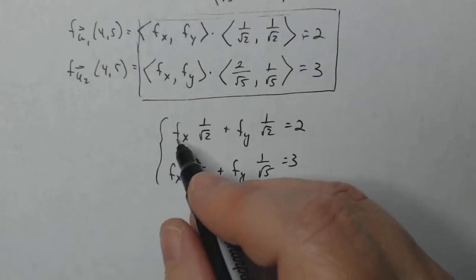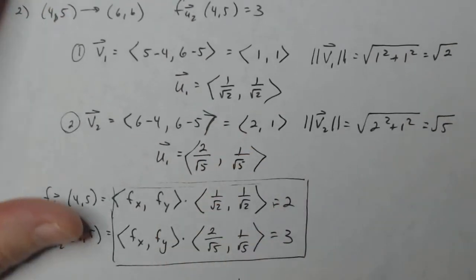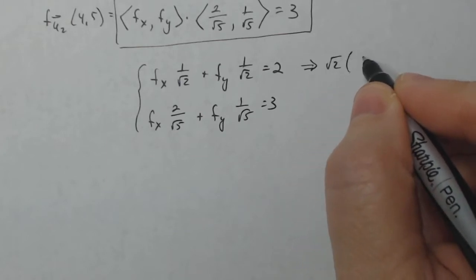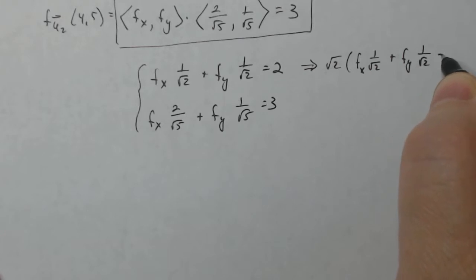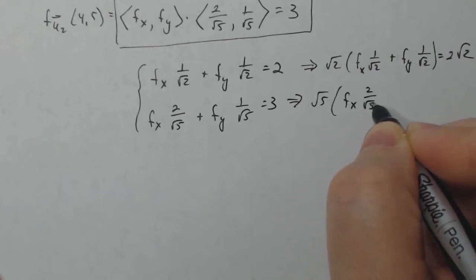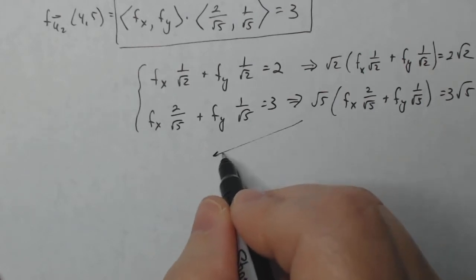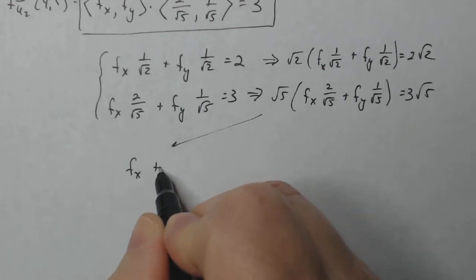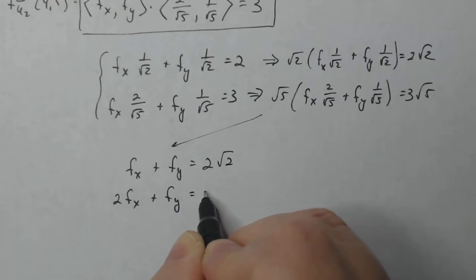My goal is to solve for F_x and F_y — that's what they want, the gradient. I'm going to take the top equation and multiply by √2, and the bottom equation by √5, because I don't like the denominators as they stand. Distributing: the first equation gives F_x + F_y = 2√2, and the second gives 2F_x + F_y = 3√5.